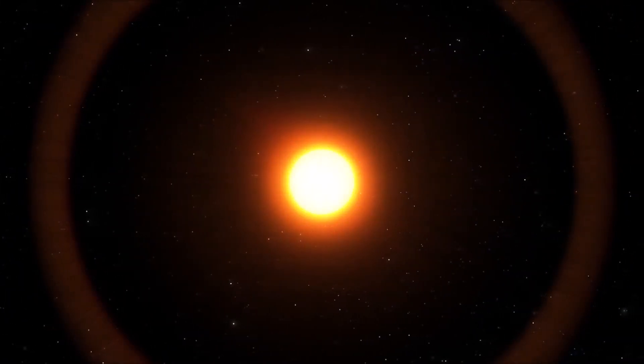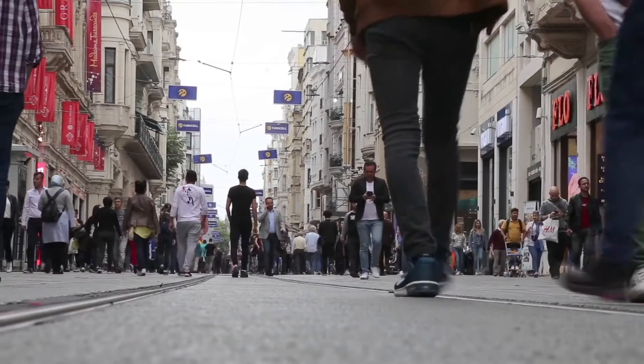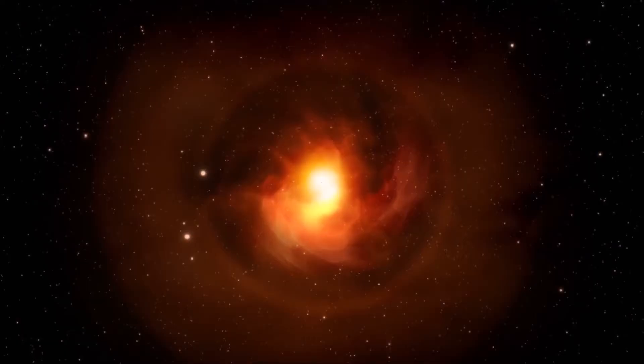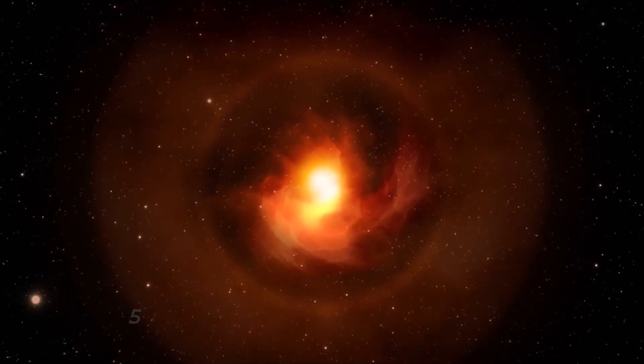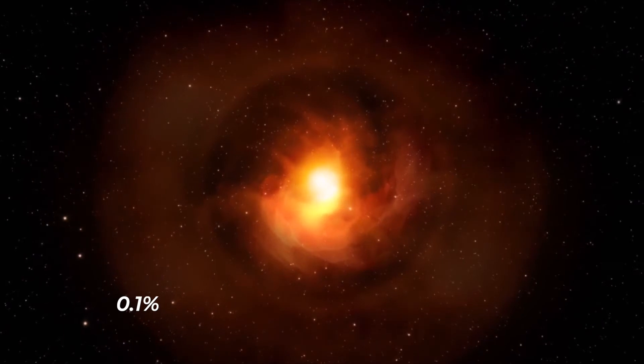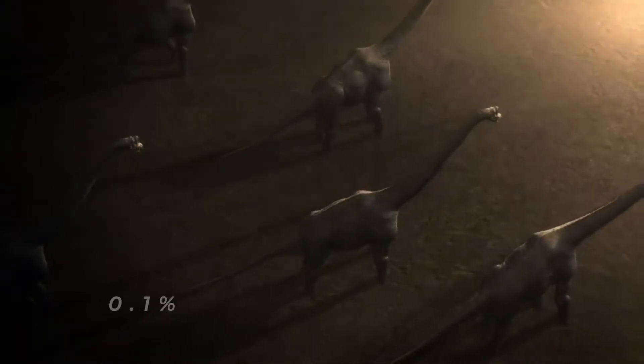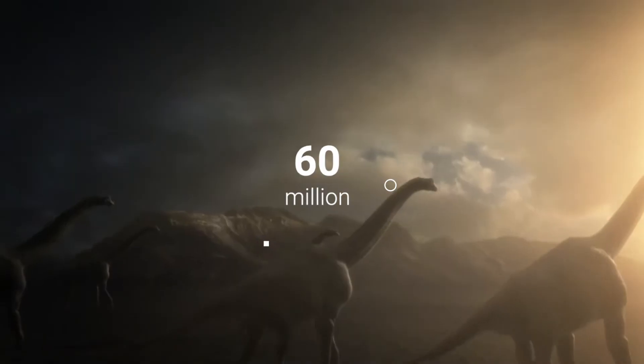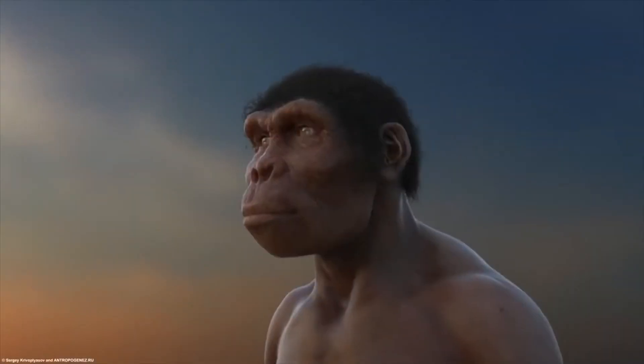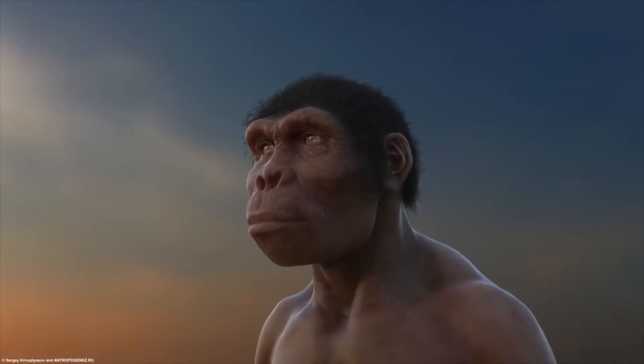PDS 70 is still in this violent formational phase. It is only an estimated 5.4 million years old. That may sound like a very long time by human standards, but it is practically the blink of an eye in astronomical terms. PDS 70 has only been around for 0.1 percent of the time that the Earth has.